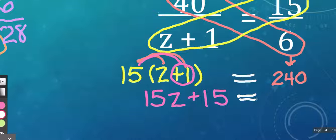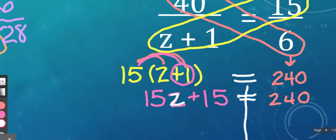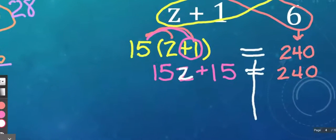And that's equal to 240. So now we still have an equation because we have that variable Z right here. And we also have an equal sign. We're just going to have an extra step when we solve this one.